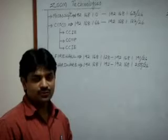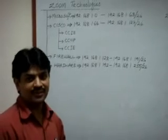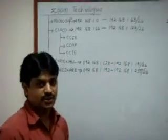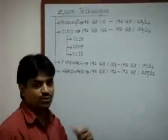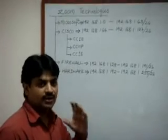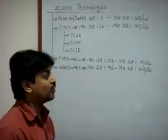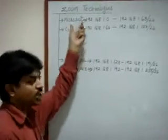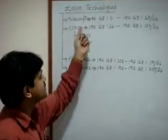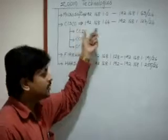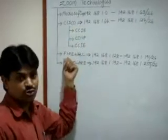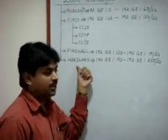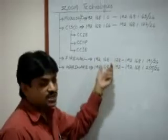In the previous video we saw how to do subnetting, also called FLSM (Fixed Length Subnet Mask), because for all subnets the subnet mask is fixed. We took an example at Zoom Technologies where four departments exist. We got four subnet ranges and assigned the first range to the Microsoft department, second to Cisco, third to Firewall, and fourth to Hardware. These departments cannot communicate with each other because they are on different subnets.